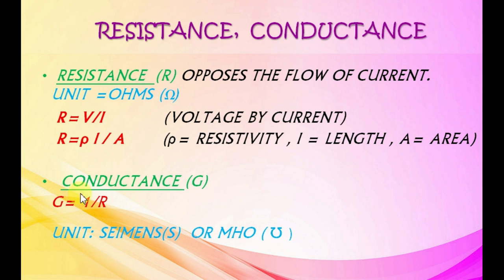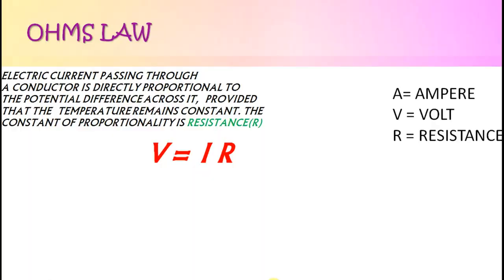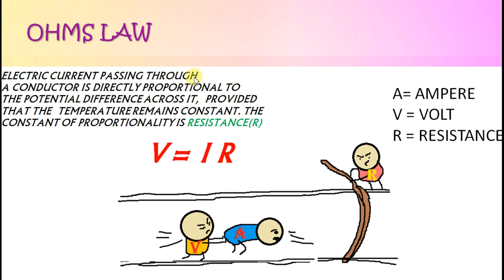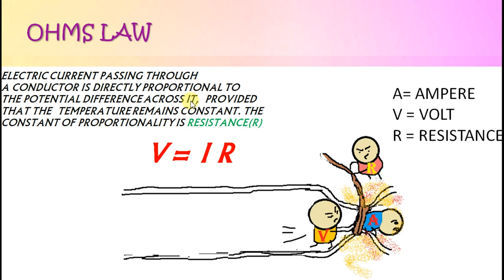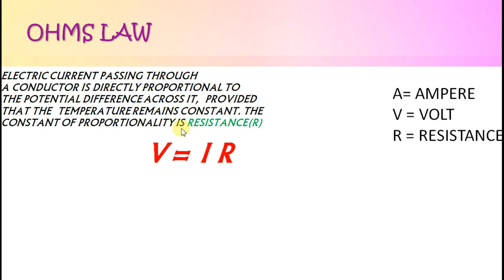Conductance G is the reciprocal of resistance. Its unit is siemens or mho. Ohm's law states that electric current passing through a conductor is directly proportional to the potential difference across it, provided that the temperature remains constant. The constant of proportionality is resistance. V equals I into R.